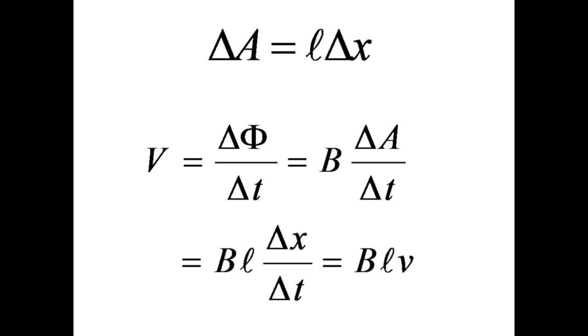By Faraday's law, the induced voltage is the rate of change of flux, which is just the constant B times the rate of change of area delta A over delta t. This becomes B times L times the rate of change of the distance x, which is just B times L times the velocity V.